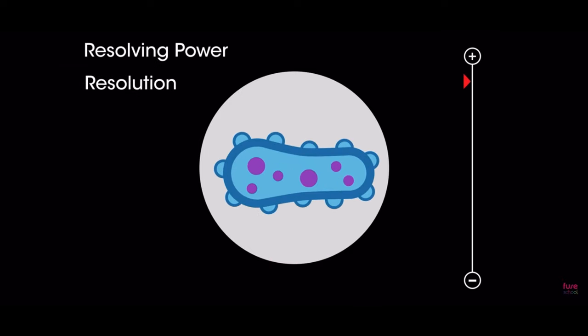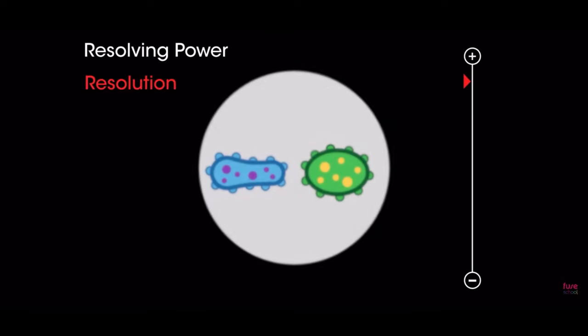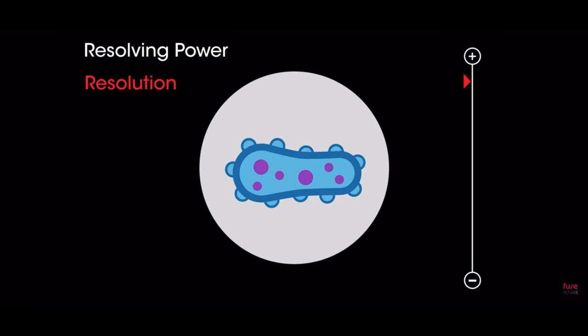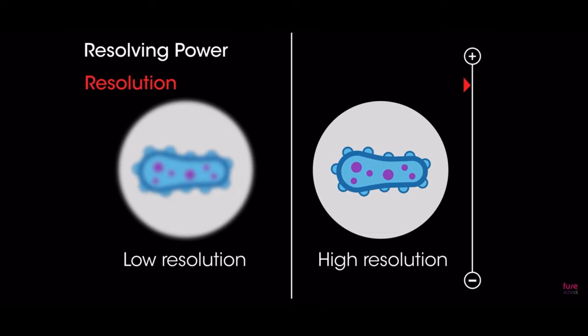The resolving power or resolution is the ability to distinguish between two points. With high resolution, you can increase the magnification without the image becoming blurry as compared to how blurry it is with low resolution.